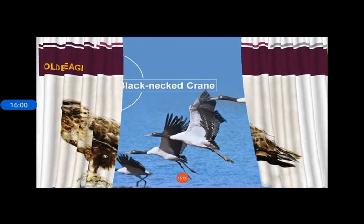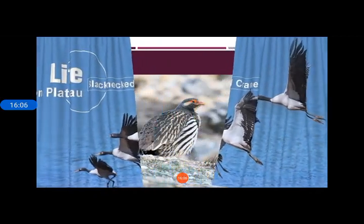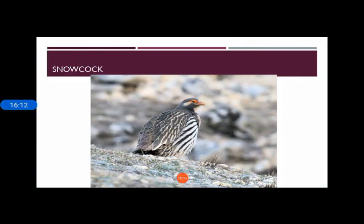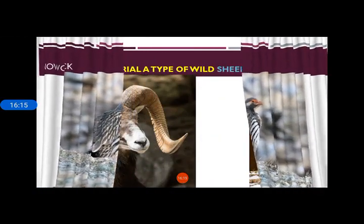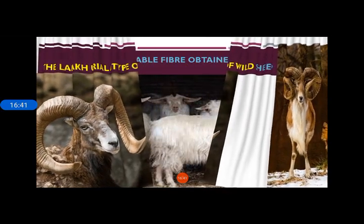Other birds found here include the black-necked crane, snow cock, red-start, hill pigeon, hoopoe, and raven. The Ladakh urial is a type of wild sheep native to Ladakh — it has very thick and giant horns.